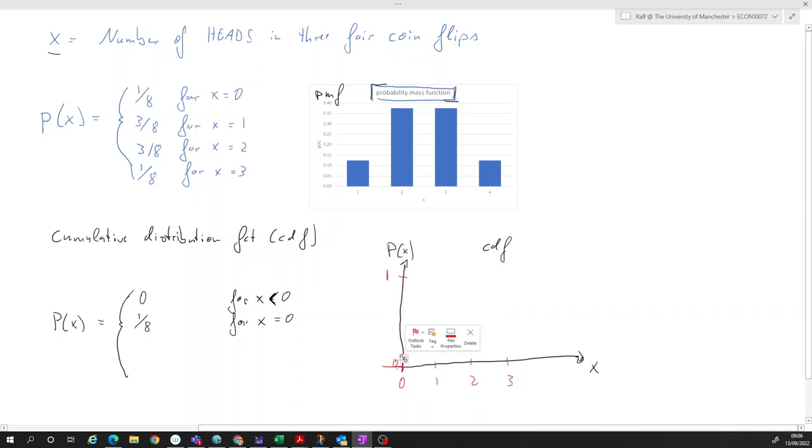So now when do we have the next value? Let me just continue that in red. Now for x equals to one, it will be one-eighth plus three-eighths, because that is the probability that the outcome is either one or smaller. That is either one over eight probability for zero or three over eight probability for x equals one. So the sum of that is four-eighths or a half. So at x equals one, the value will be here. Let me just make a little dot. Okay, so here.